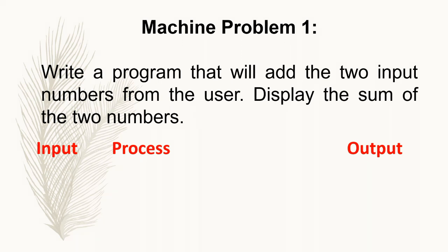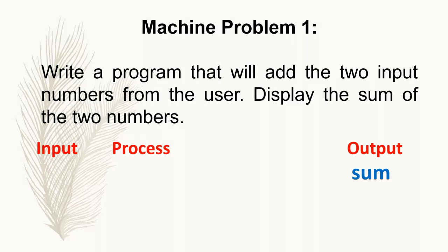The output is what the user wants to see on the screen as the solution to the problem. Here, the keyword is 'display', so we will display the sum. After analyzing the problem, you must first determine the output. The next step is to determine the input. To get the sum, what inputs do we need? We need two input numbers.